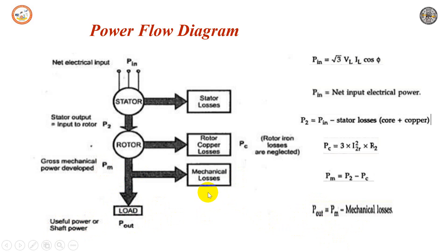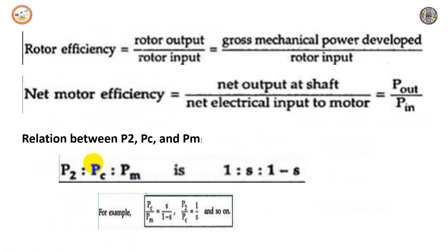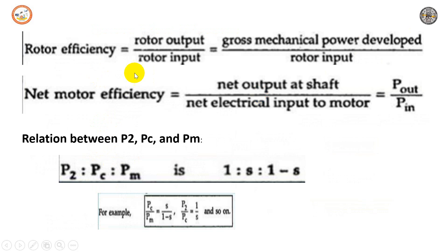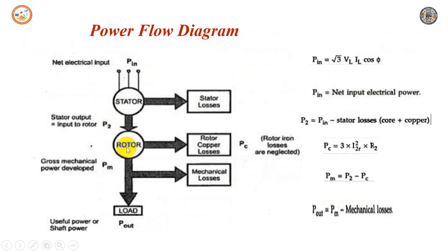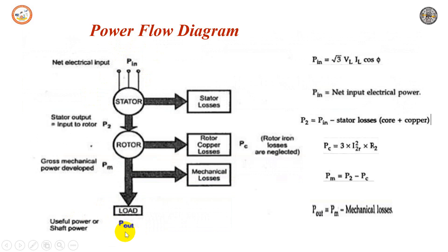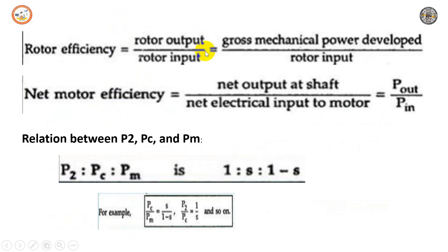The rating of the motor is specified in terms of P_output, which is the maximum output power at full load condition. These stages are shown diagrammatically in the power flow diagram of the induction motor. Rotor efficiency is rotor output divided by rotor input, that is PM / P2. Net motor efficiency is P_output divided by P_input.